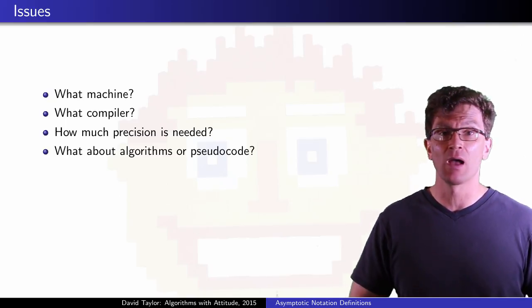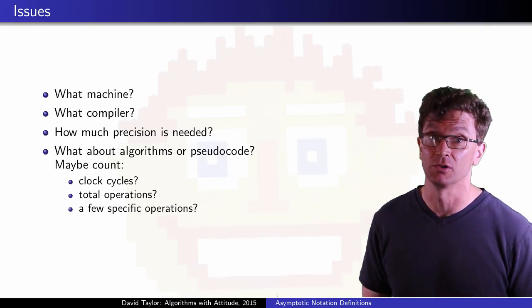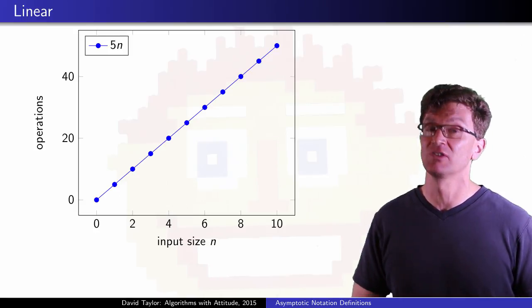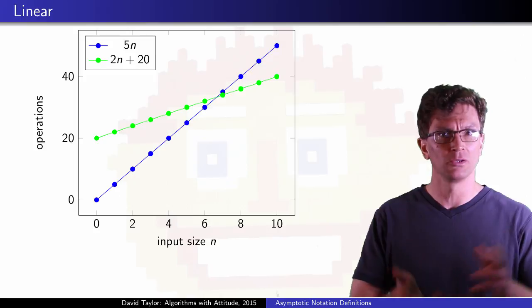Maybe we'll count clock cycles, or operations, or just a few specific operations. If we want to discuss a function like 5n operations, it's clearly linear. So is 2n plus 20, right? Slope intercept format.